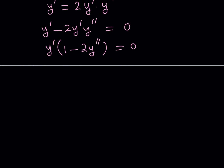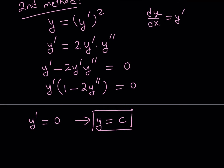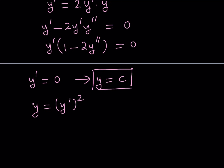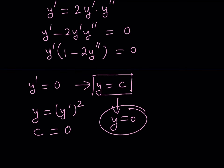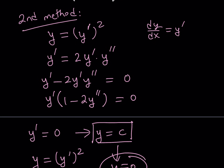From the zero product property, each factor can equal zero. Starting with y prime equals zero: that means y is a constant, because the derivative of a constant is zero. So y can be written as y equals c. If we plug that into the original equation y equals y prime squared, we have c equals zero squared, which gives c equals zero. Therefore y equals zero is a solution, which makes sense — if y is zero, its derivative is zero, and zero squared equals zero.